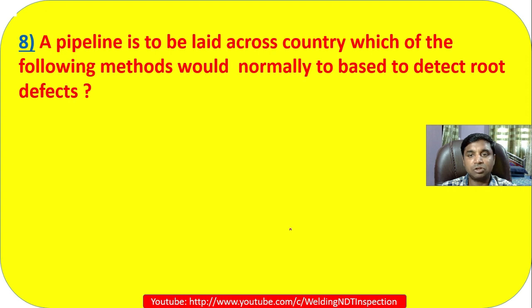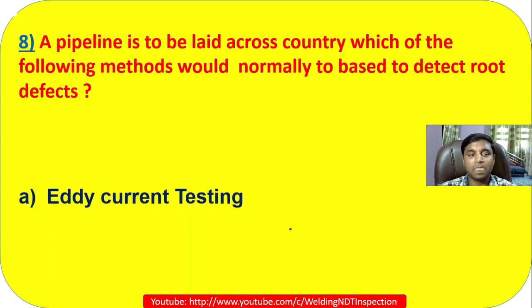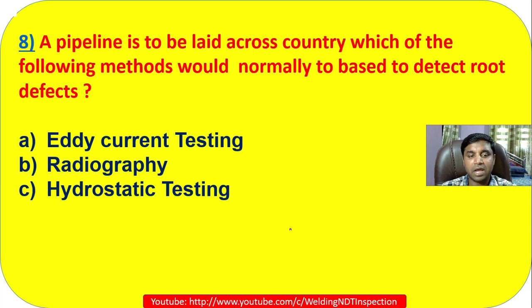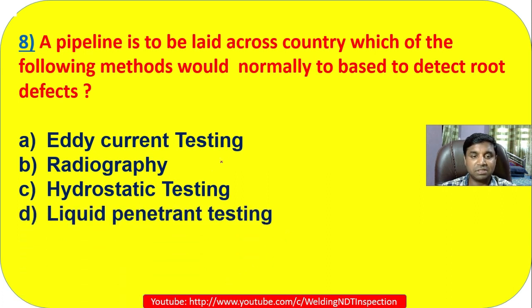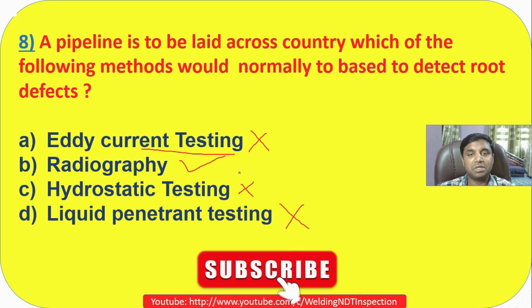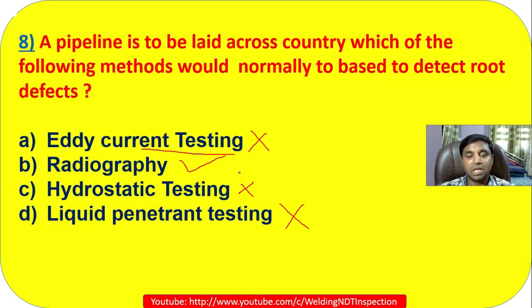Question 8: A pipeline is to be laid across country — which of the following methods would normally be best to detect root defects? Options: eddy current testing, radiography, hydrostatic testing, or liquid penetrant testing. Liquid penetrant testing and hydrostatic testing are not suitable for detecting root defects in this context. The main answer is radiography — you can check root defects only by radiography. Answer is B.